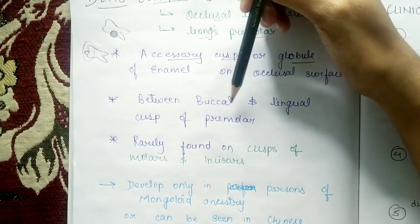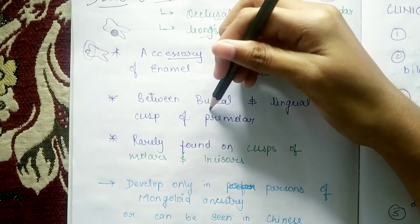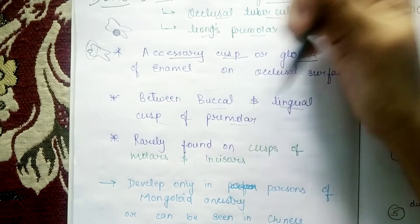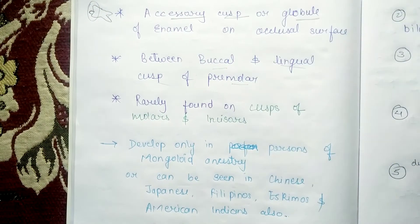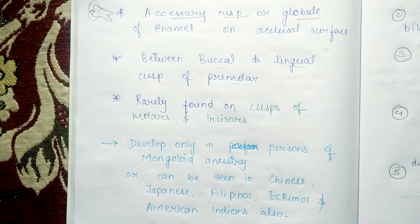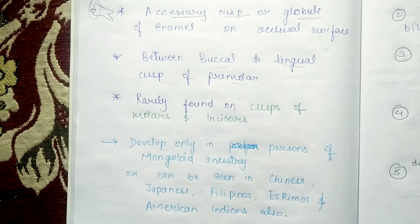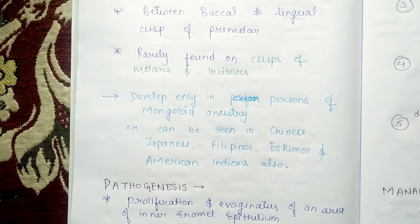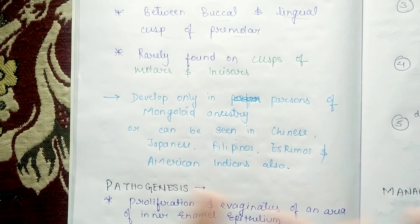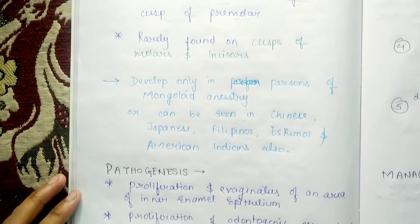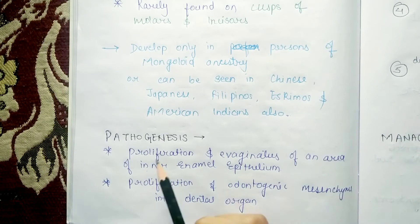This globule is found between the buccal and lingual cusp of premolars. It is rarely found on molars and incisors. It is predominantly seen in mongoloid incisors and can be found in Chinese, Japanese, Filipinos, Eskimos, and American Indians.